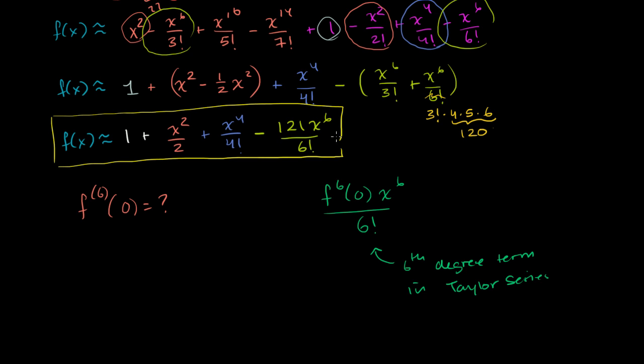And we have that term sitting right over here. This is the sixth degree term we figured it out in the last problem. So you have x to the sixth over here, x to the sixth over here. You have 6 factorial over here, 6 factorial over here. So this negative 121 must be the sixth derivative of f evaluated at 0.